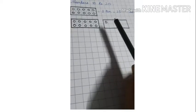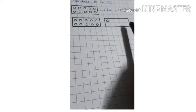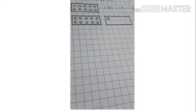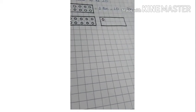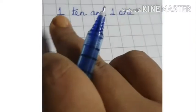Ye akela hai. So ye kya hoga? 1 ten and 1 ones. So we'll have to write the number as 1, 10 and 1, 1. So 1 ten and 1, 1.